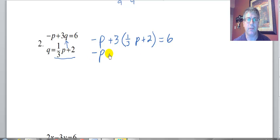So now I have all P's. That's good. So P, 1 third times 3, negative P plus P, and 3 times 2 is 6, right? I have to distribute. So plus 6 equals 6. So I get 6 equals 6.